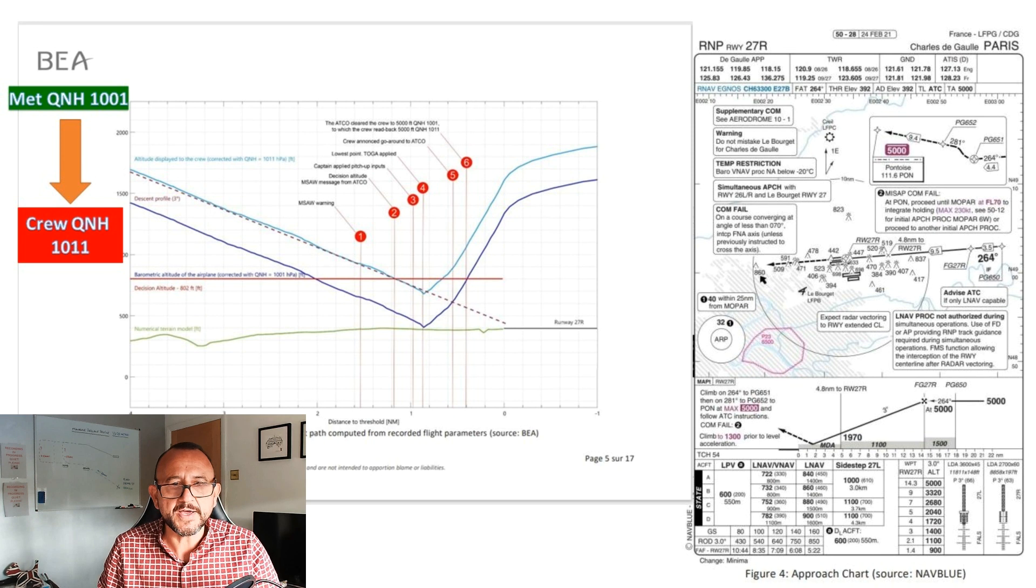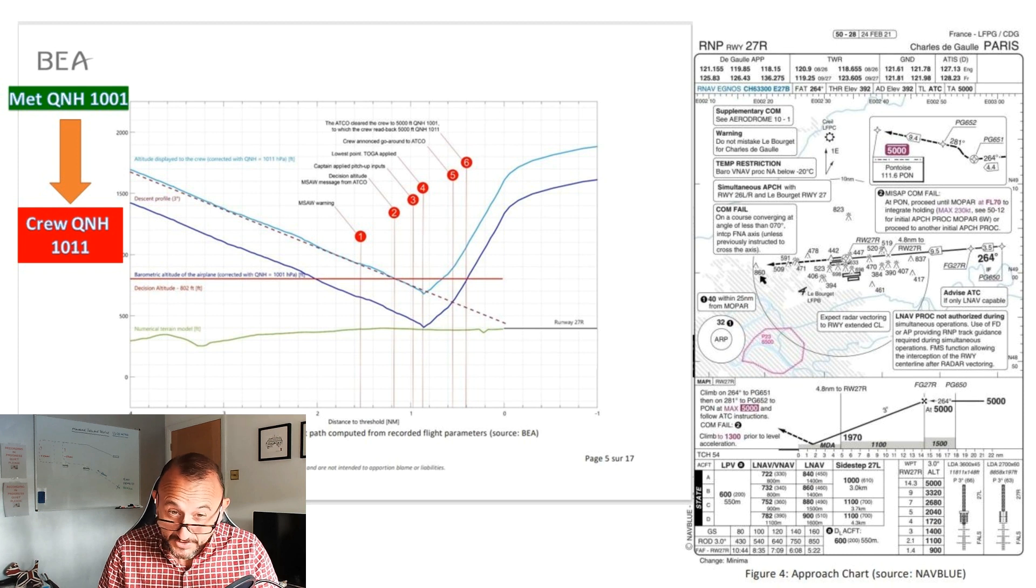The first one I'm going to show you is an extract from the BEA report. It shows the various trajectories, which is the actual descent profile, the terrain data in green there at the bottom, and it also shows the barometric altitude of the airplane corrected for QNH and the correct path that should have been flown.